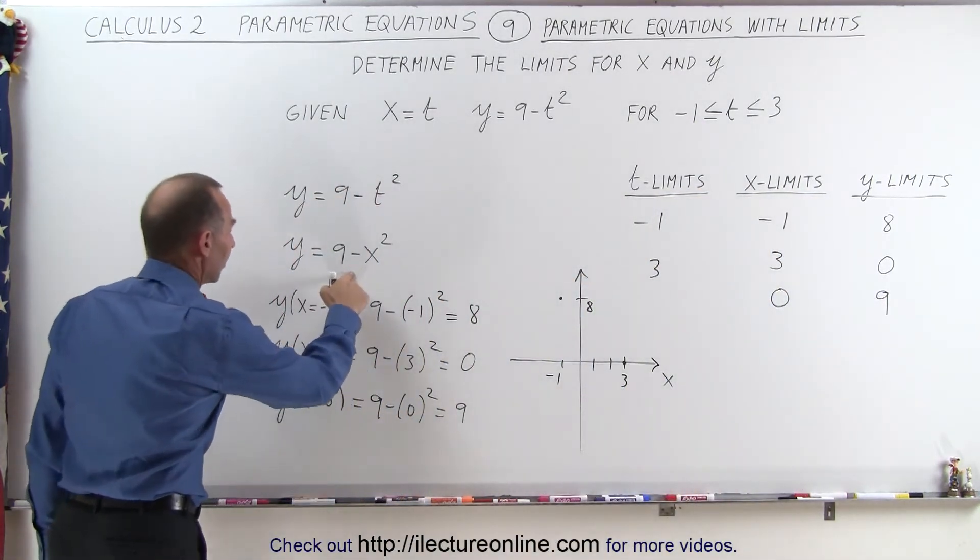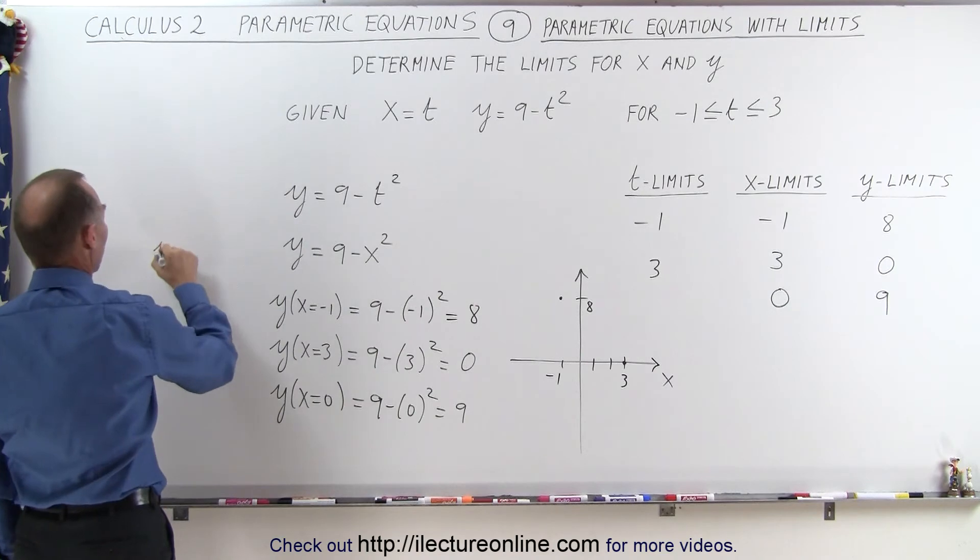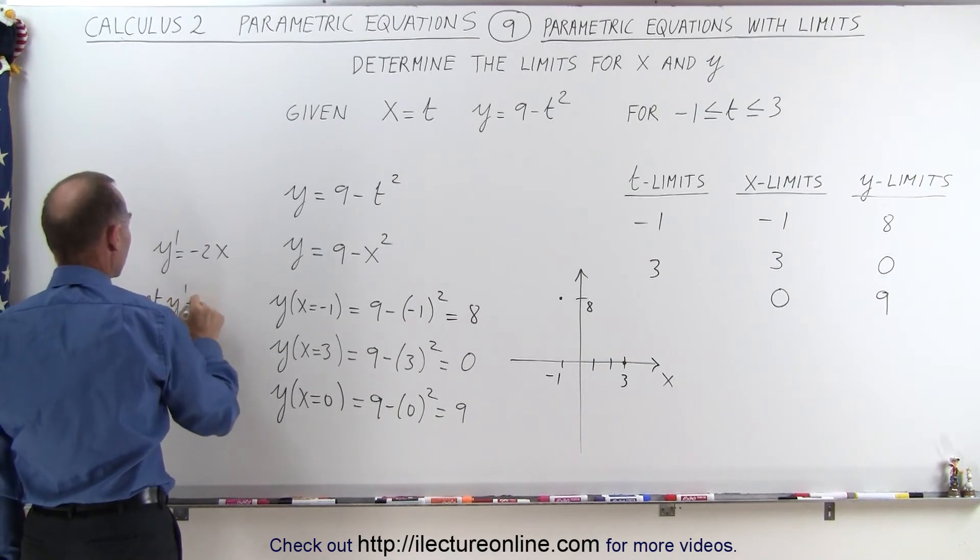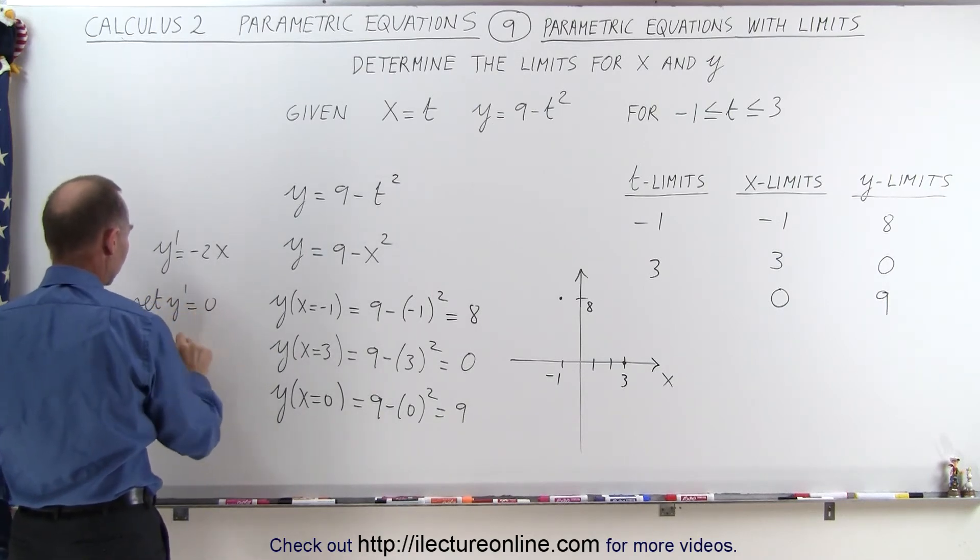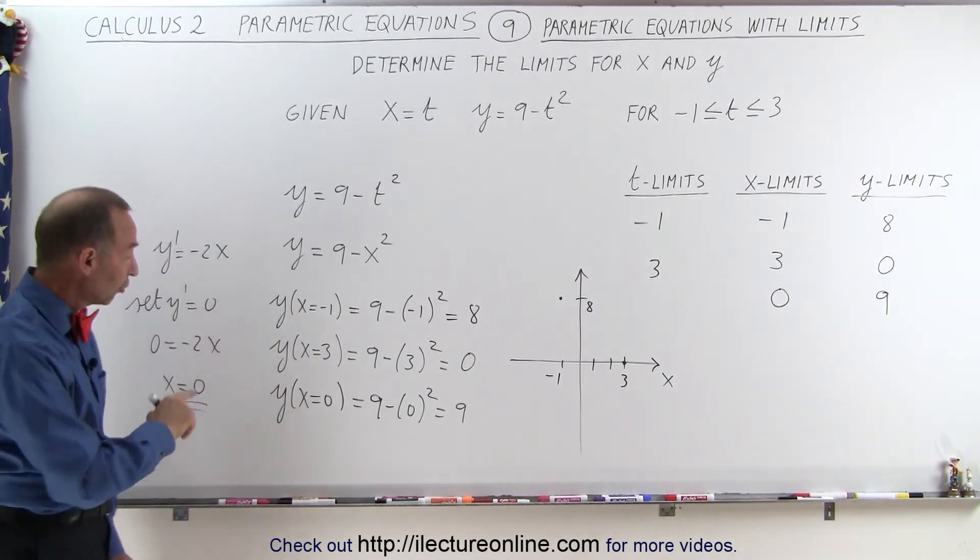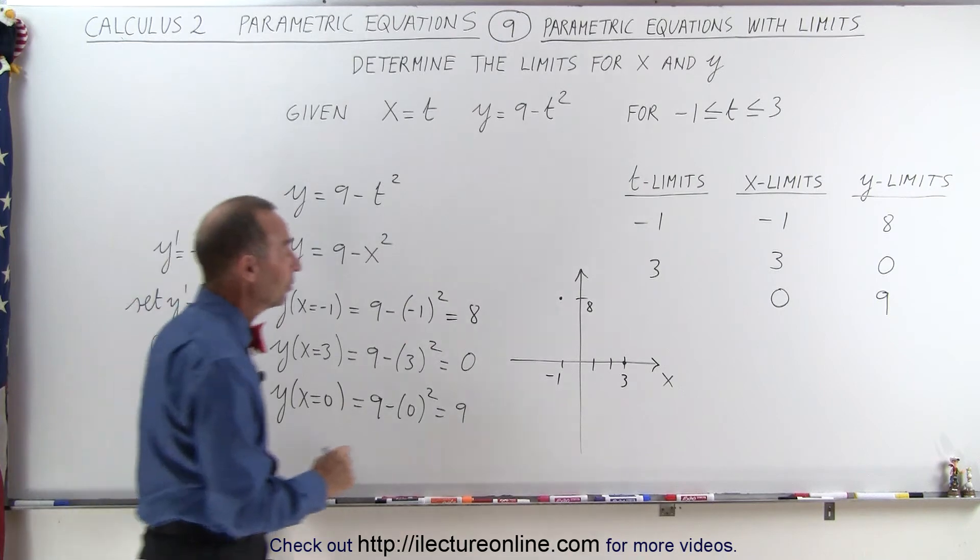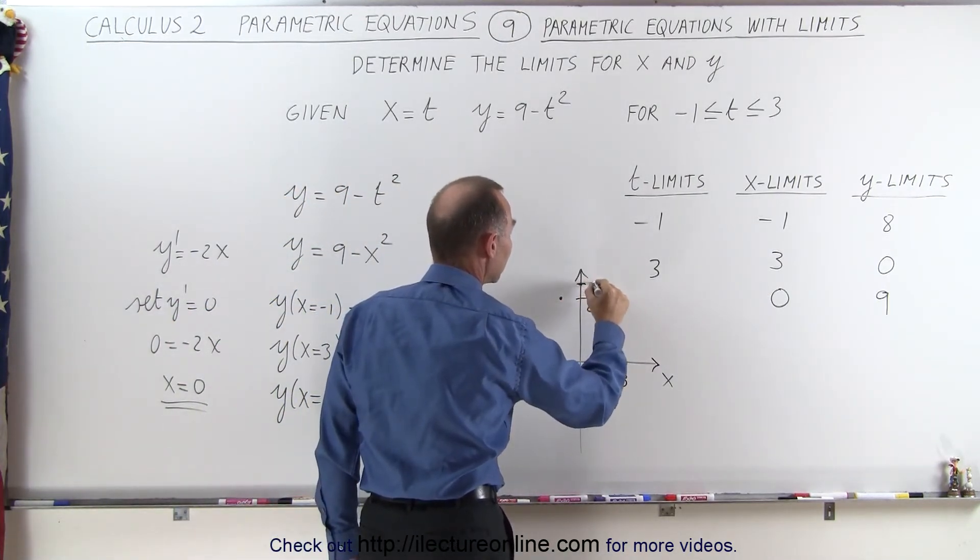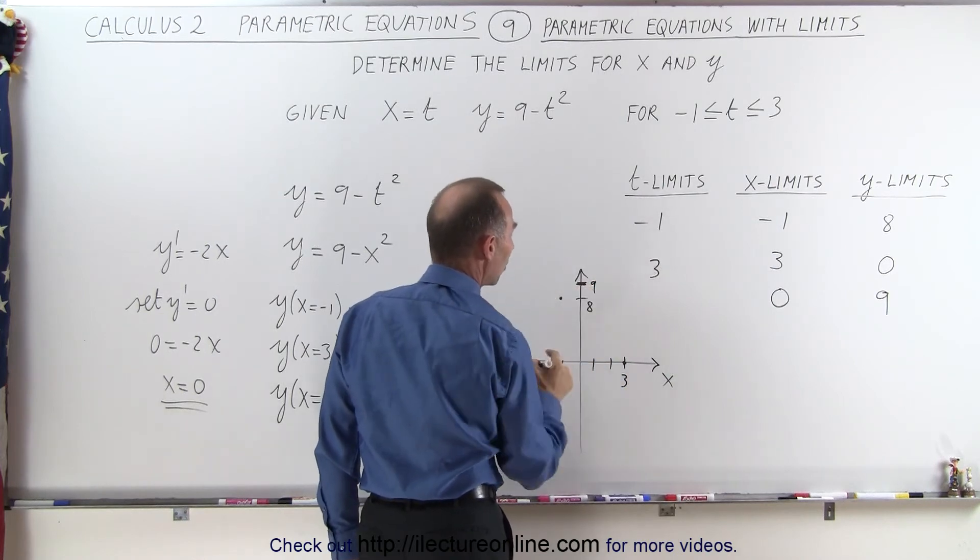So if we take the derivative of this, we can say that y prime is equal to minus 2x. And then when we set y prime equal to 0, we get 0 is equal to minus 2x, or x equals 0. Here we realize that when x equals 0, the slope is equal to 0, which means at this point, when x is equal to 0, y is equal to 9.